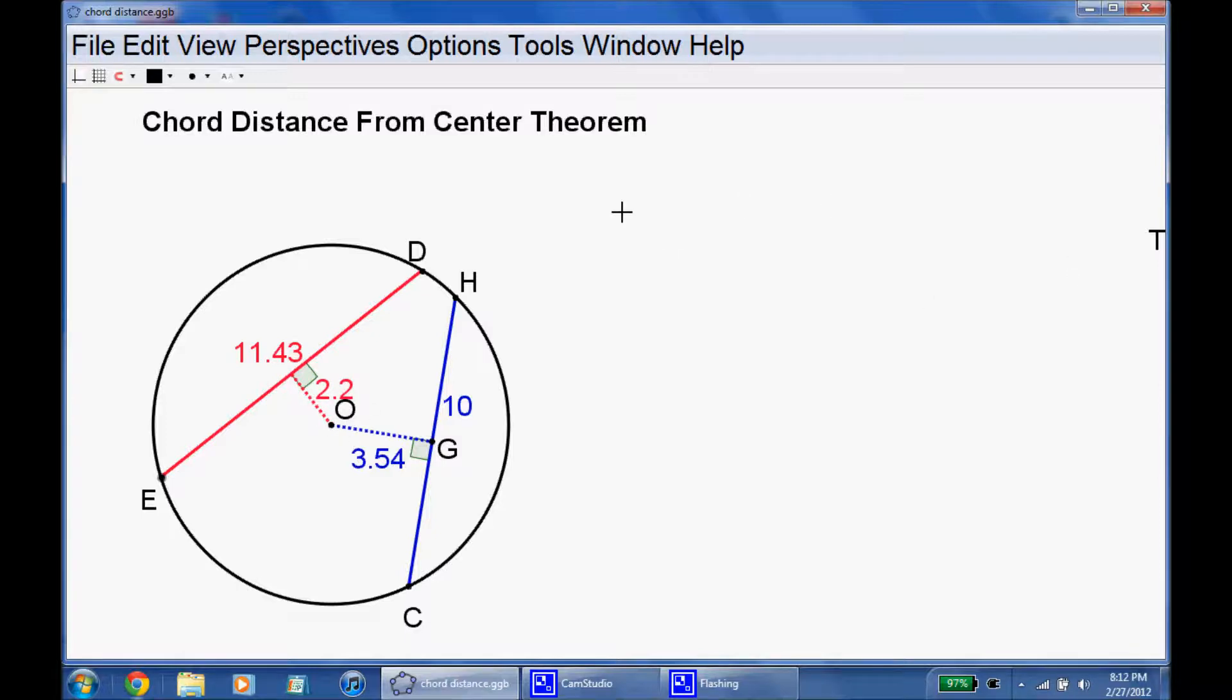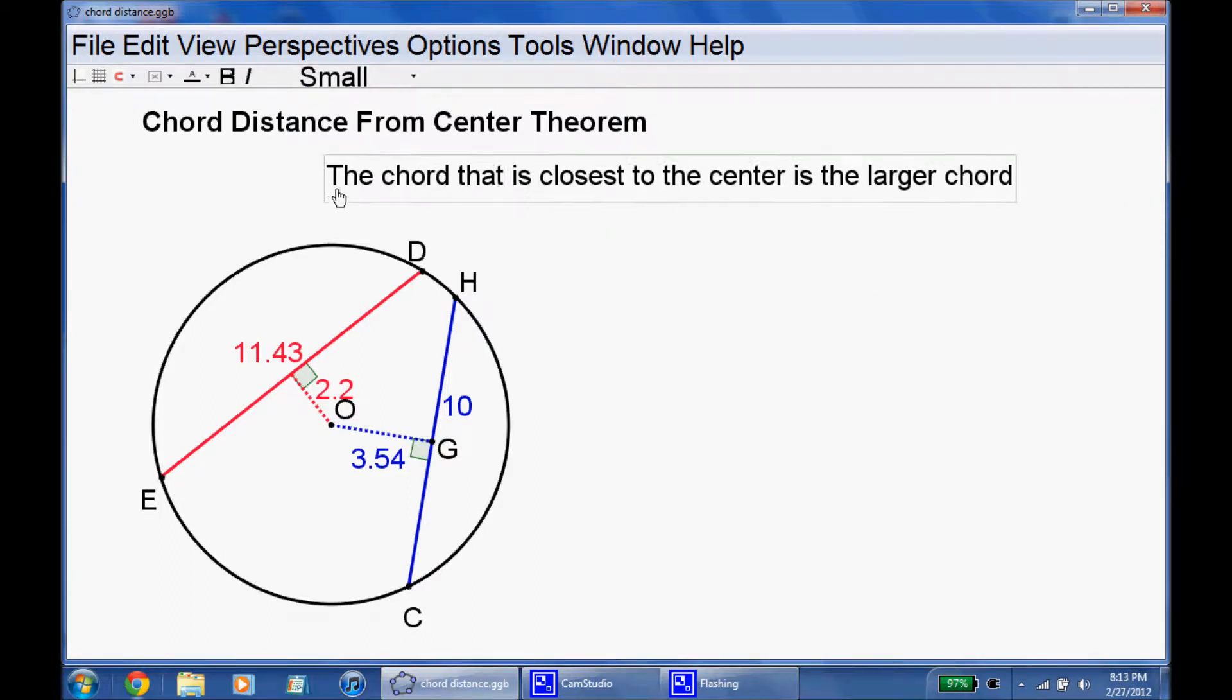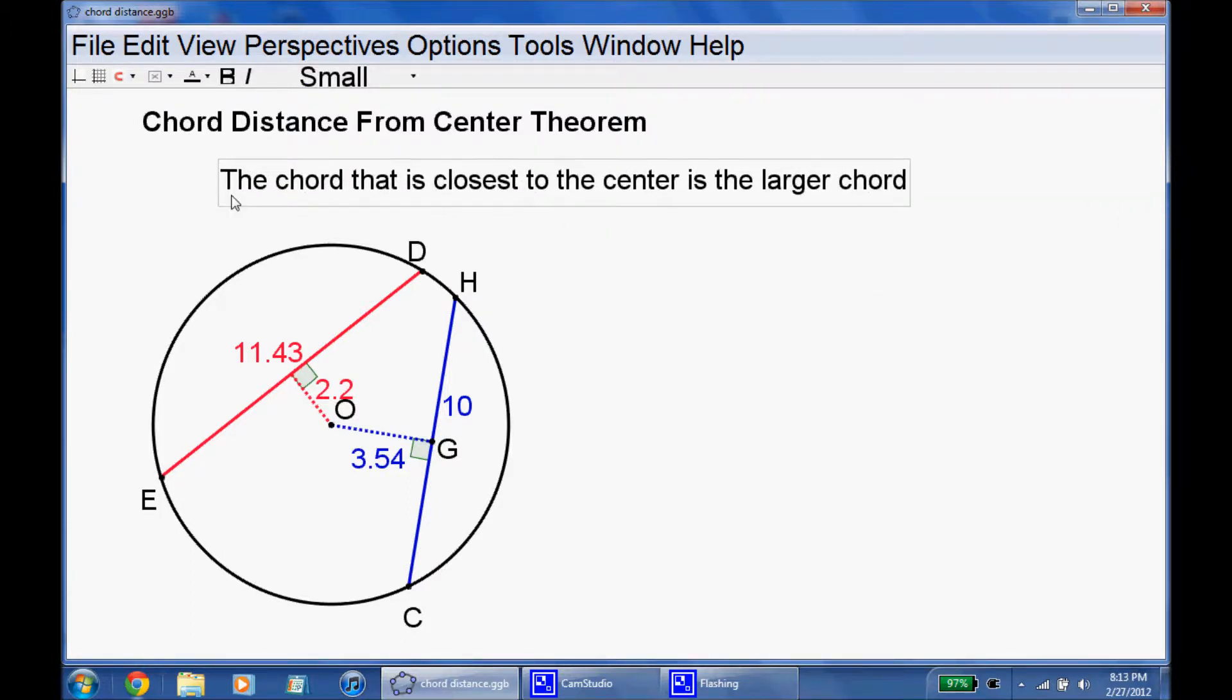And if you do remember, if we have a diameter, it goes straight through the center of the circle, it's on the circle, it's 0 away, and we said that the diameter is the largest chord. So let's take a look at this theorem. This theorem says that the chord that is closest to the center is the larger chord.